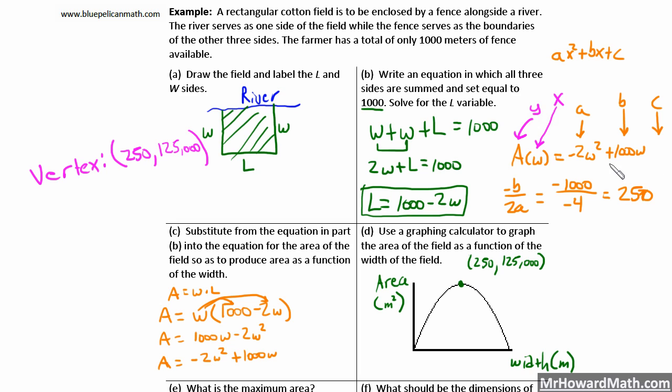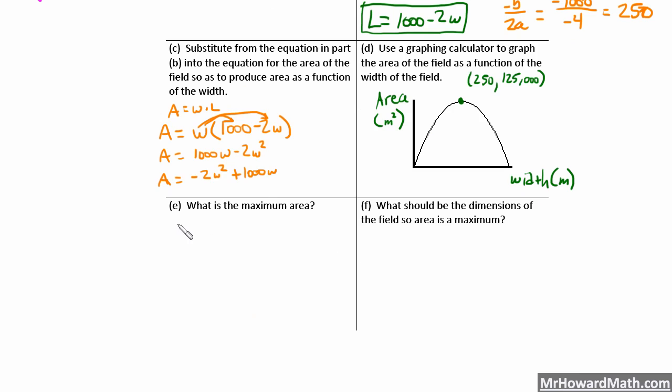Now let's finish this problem up with the last two parts. So the last thing it asks us for is what is the maximum area? Well, remember area is our y-axis. So the maximum area occurs up here at the maximum point of this function. The maximum value of the function, the maximum y value is 125,000. So the maximum area that we could make in this problem situation is 125,000 square meters. So that's the answer to that.